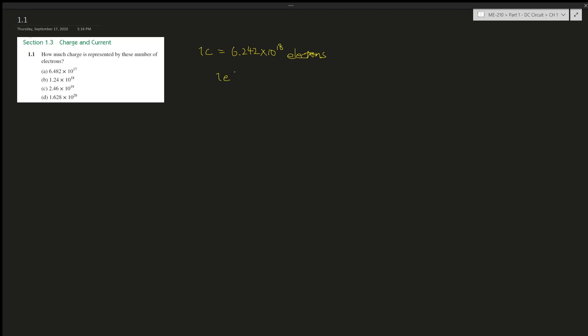Now one electron, right, so we say e, and that one electron has this many charges: 1.602 times 10 to the power of negative 19 charges.